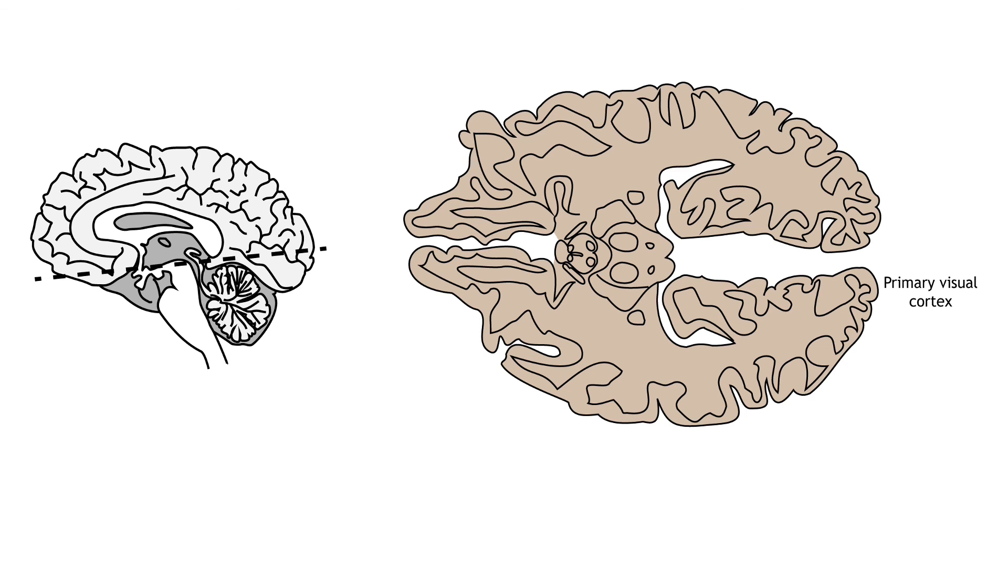Although most retinal output projects to the lateral geniculate nucleus of the thalamus and then to the primary visual cortex, there are some axons that project to other areas of the brain. A subset of specialized retinal ganglion cells project to the suprachiasmatic nucleus in the hypothalamus. This region is critical for circadian rhythms and the sleep-wake cycle.